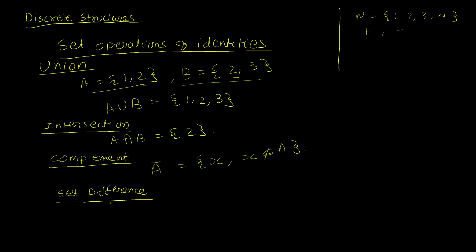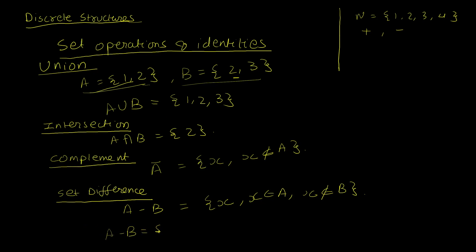The next operation is set difference. A minus B is a set that contains all elements x such that x is a member of A but not a member of B. Using the same sets A and B, A minus B would be {1}, since 1 is the only element in A that is not in B.